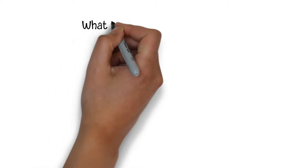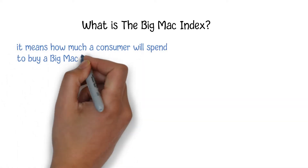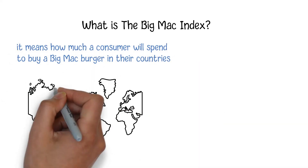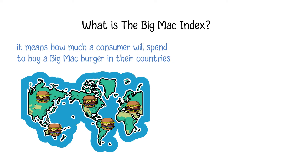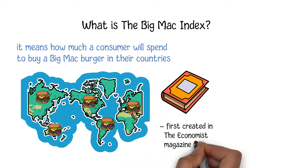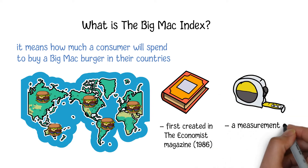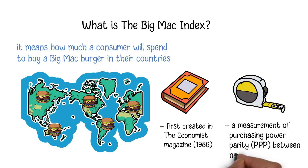The Big Mac Index is an economic indicator to measure the difference in consumer purchasing power between different countries. Put simply, it means how much a consumer will spend to buy a Big Mac burger in their country. This index was first created in The Economist magazine in 1986 as a measurement of purchasing power parity between nations, and then this term is widely spread around the world.